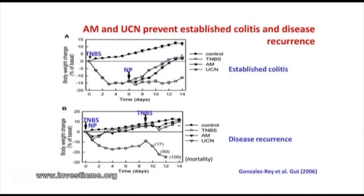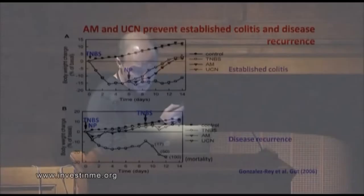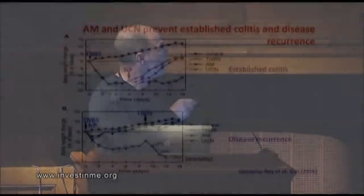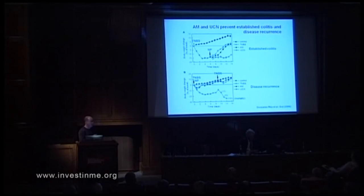Importantly, we can inject the neuropeptide once the disease is already established as a chronic disease and still re-establish homeostasis. Another important finding: if you inject the neuropeptide only at the beginning, this initial treatment confers tolerance to a second injection of TNBS. Control animals without treatment all die from colitis after a second TNBS challenge, while animals initially treated with neuropeptide resist this second challenge. From a therapeutic standpoint, this means a single early administration could prevent a second disease peak.